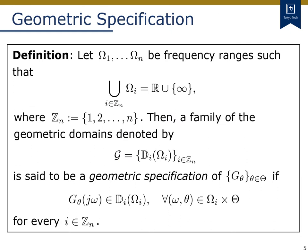Based on this segmentation idea, we define the notion of the geometric specification of model sets. Let ω_1 to ω_n be some frequency ranges such that their union covers the full frequency range. Then, a family of geometric domains, denoted by script G, is set to be a geometric specification of a model set if the segments of its Nyquist surface are covered by the set of domains D_i associated with a compatible frequency range ω_i. This definition is just a mathematical rephrase of the figure in the previous slide.